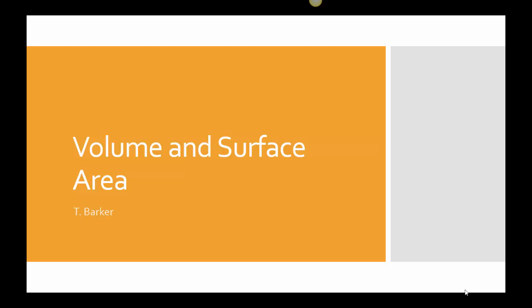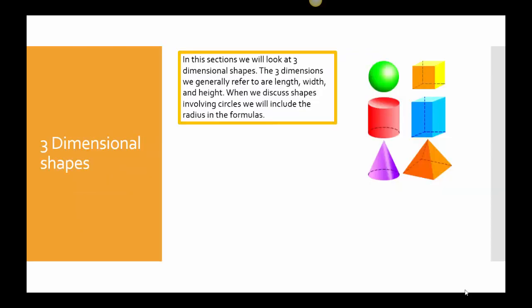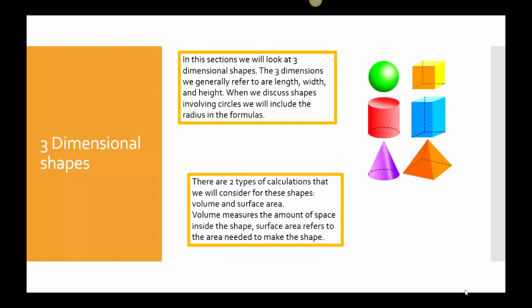In this video, we're going to talk about finding volume and surface area. This section takes a look at three-dimensional shapes. The three dimensions we generally refer to are length, width, and height. When we discuss shapes involving circles, we will include the radius in the formula. There are two types of calculations that we will consider for these shapes: volume and surface area. Volume measures the amount of space inside the shape. Surface area refers to the area needed to make the shape.